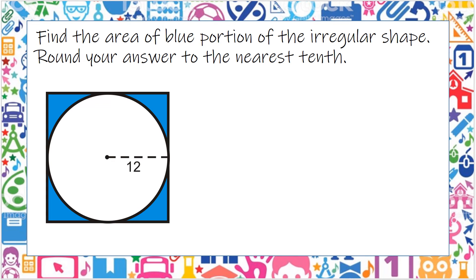Find the area of the blue portion of the irregular shape. So the first thing we're going to do is we're going to find the area of the circle that's not covered. So that's going to be pi times r squared.